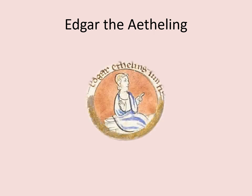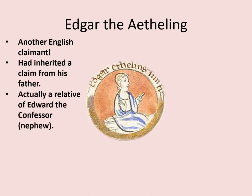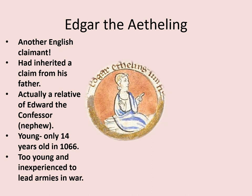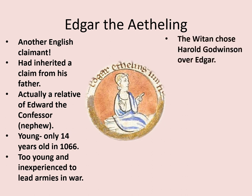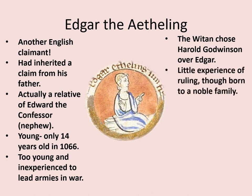The other English claimant was Edgar the Atheling. He's another English claimant who inherited a claim from his father. He's actually a relative of Edward the Confessor — his nephew — but he is only very young, about 14 years old in 1066. That means he's too young and inexperienced to lead armies in war. For this reason, the Witan chose Harold Godwinson over Edgar. He has little experience of ruling, although he has been born to a noble family — after all, Atheling means prince or highborn.